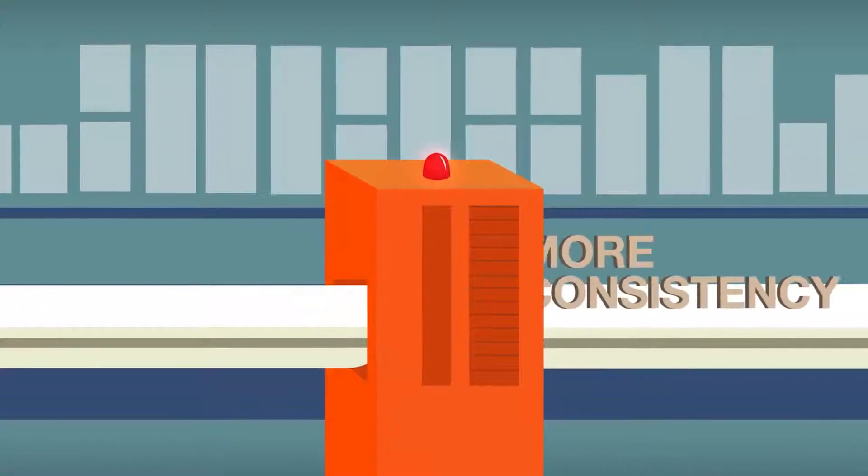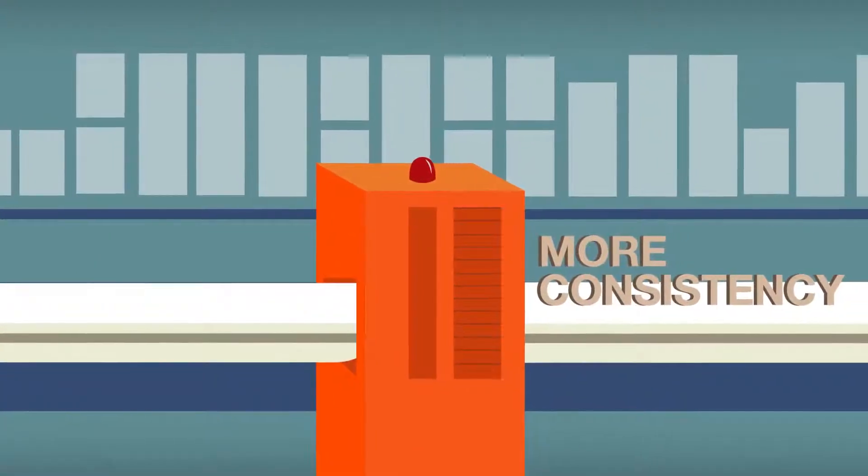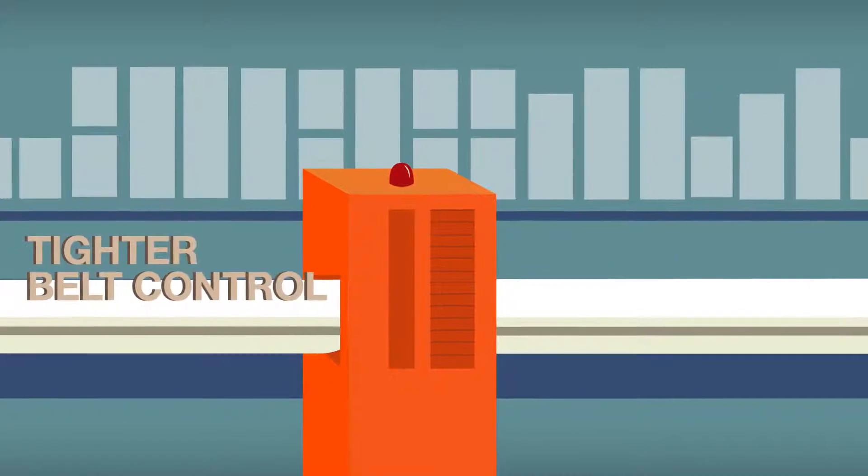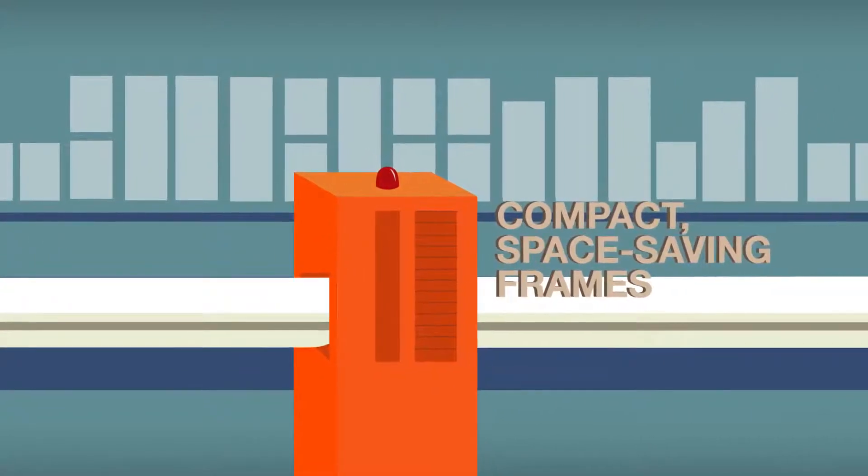Increased precision means more consistency when transferring small or odd-shaped products. And tighter belt control means more compact, space-saving frames.